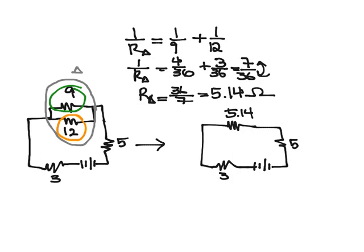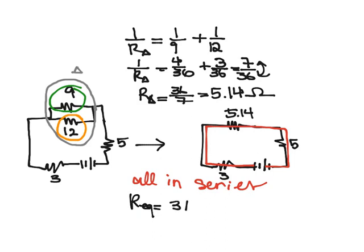And what I'm going to do is I look at these 3, I see that if I was an electron and I went through 1, I would have to go through all 3 of them to get back to the battery, so they're all in series, and therefore I can just add them all up and I have R_EQ total is just 3 plus 5 plus 5.14, which ends up being 13.14 ohms.